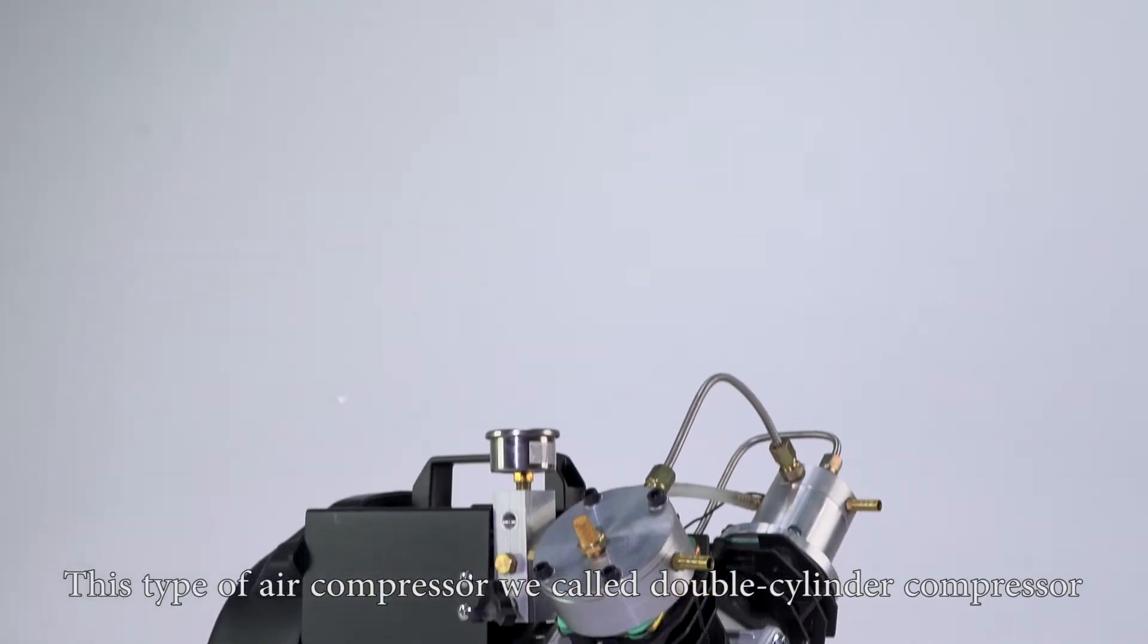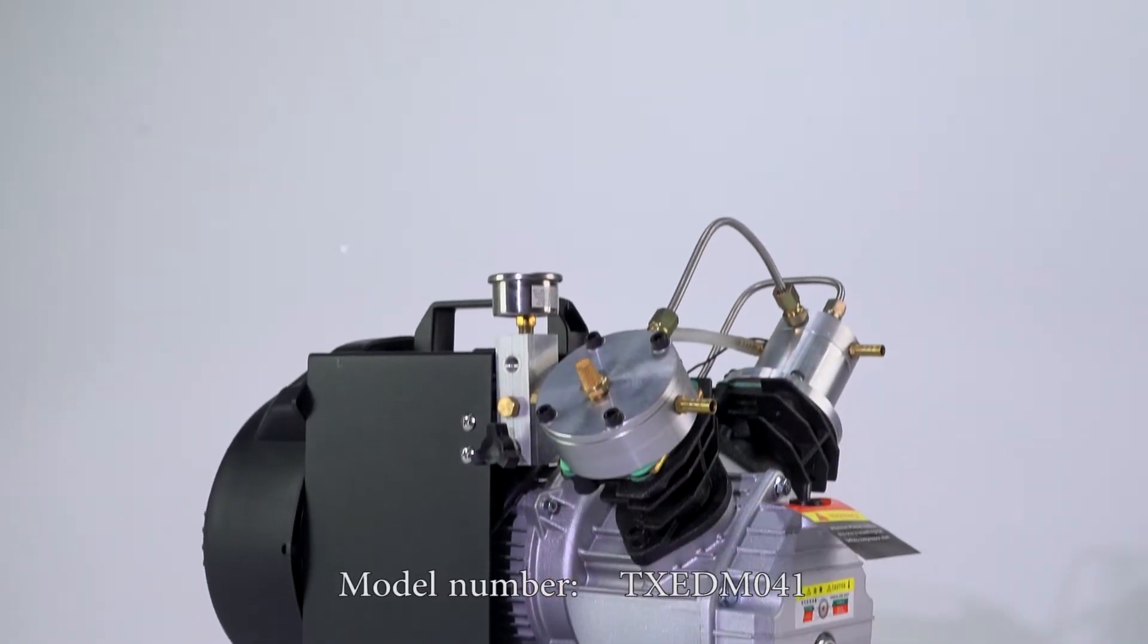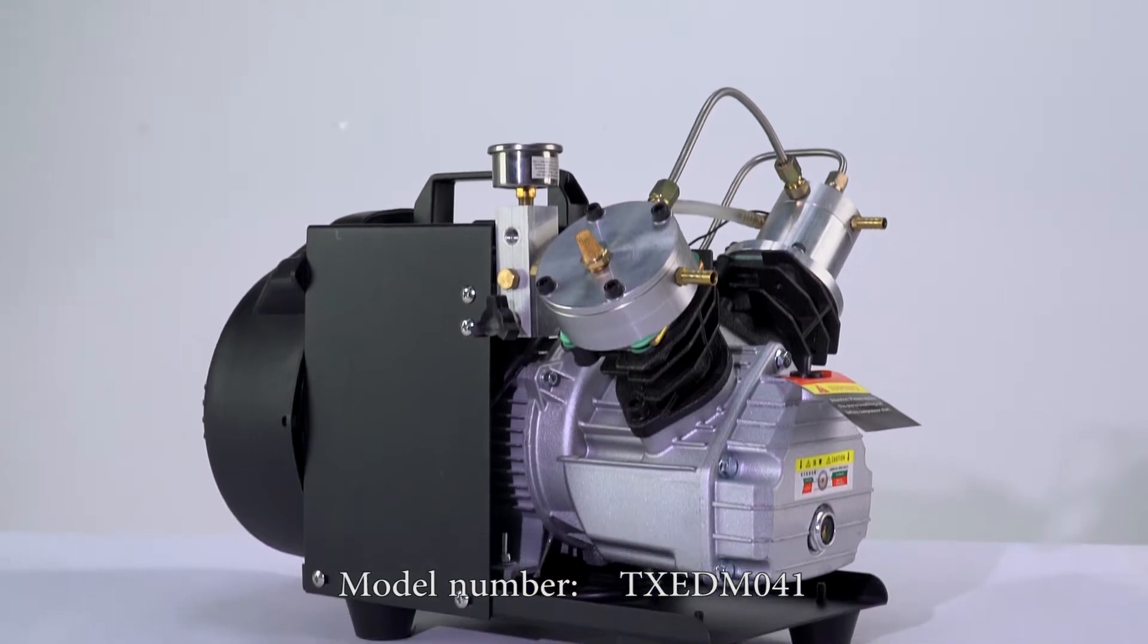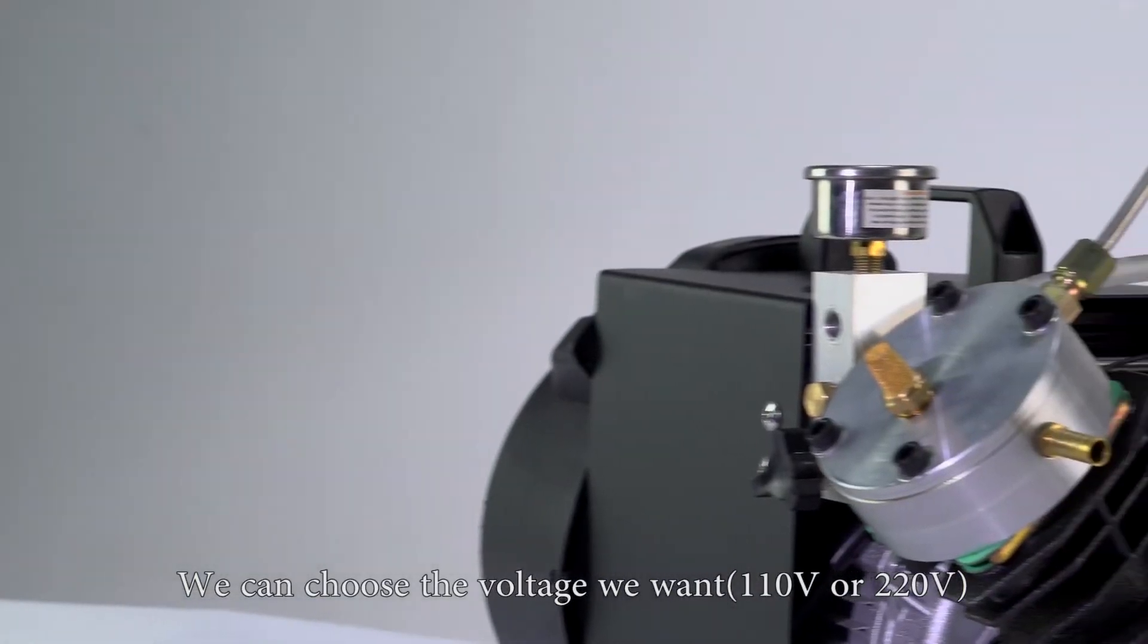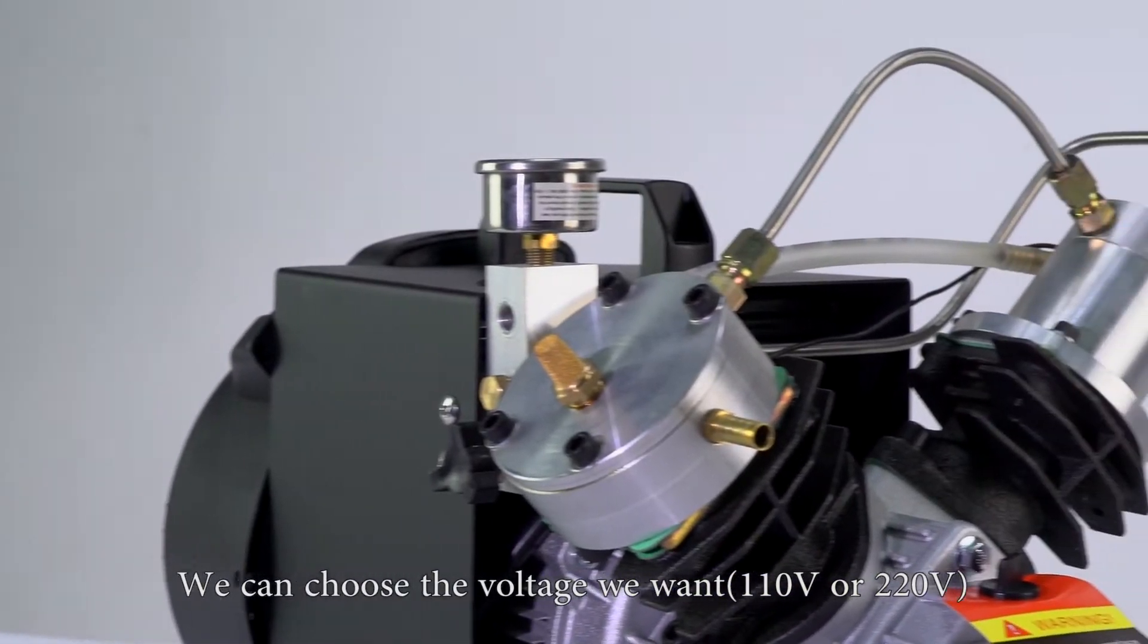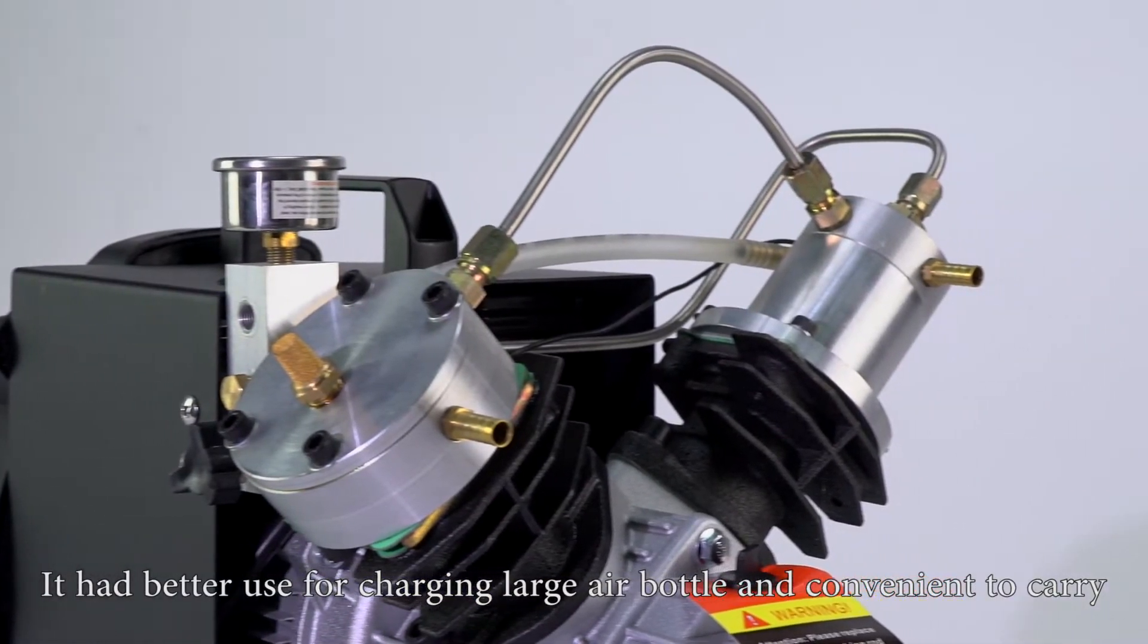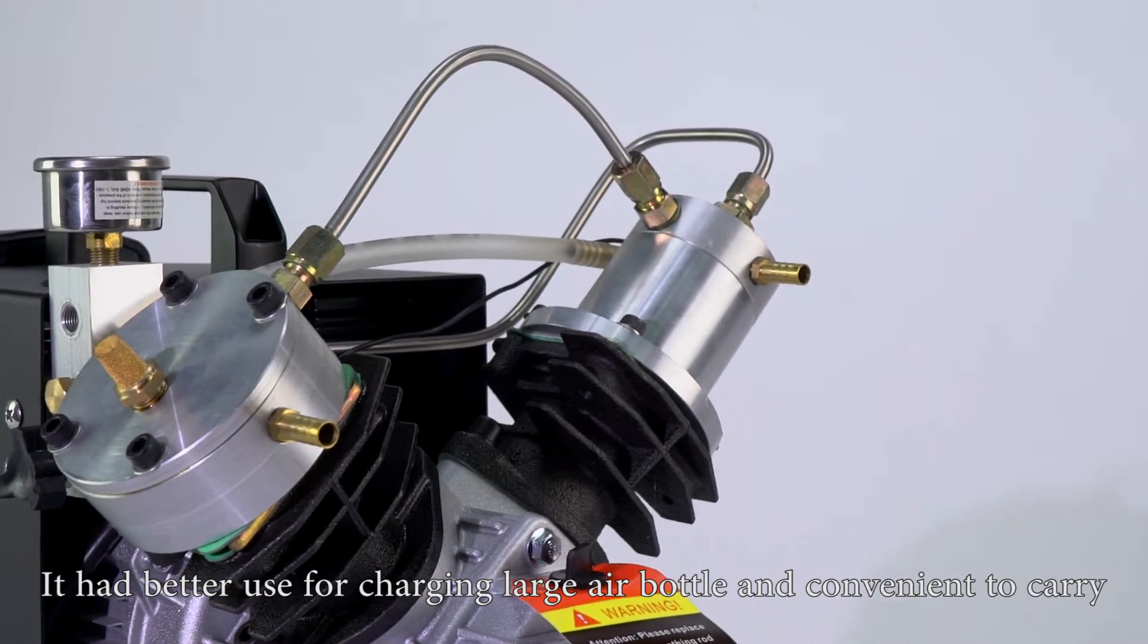This type of air compressor is called a double cylinder compressor, model number TXEDM041. We can choose the voltage we want, 110 volt or 220 volt. It's best used for charging large air bottles and is convenient to carry.